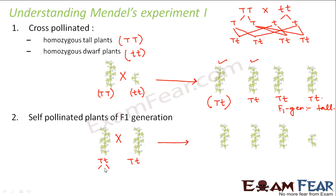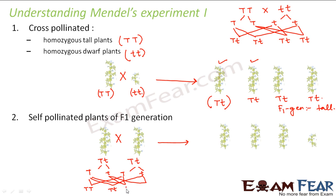We now understand where the dwarf trait came from, because it was present inside the F1 plants. When Tt is self-pollinated (Tt × Tt), the possible combinations are: TT, Tt, Tt, and tt. So one plant is homozygous tall (TT), two are heterozygous tall (Tt), and one is homozygous dwarf (tt). That is why three plants were tall and one was dwarf — explaining Mendel's results.